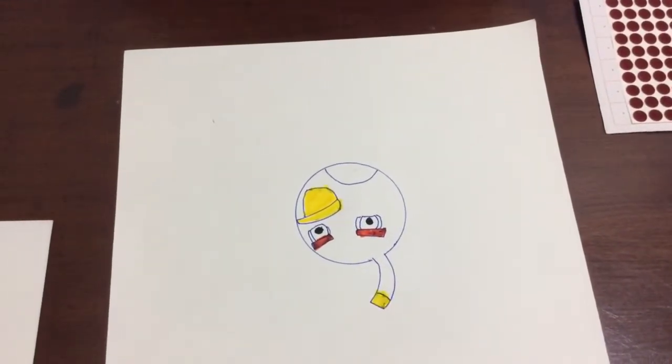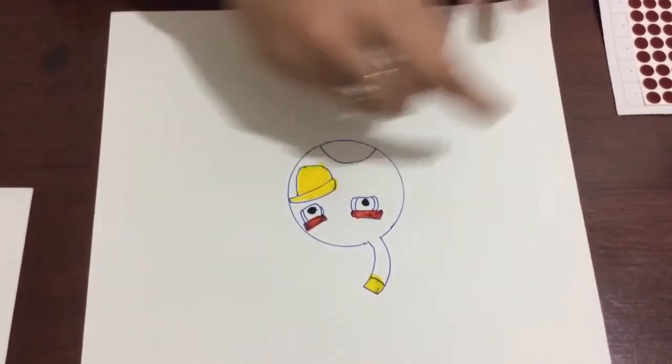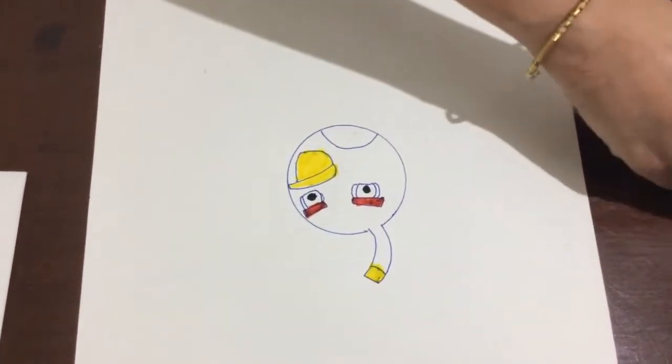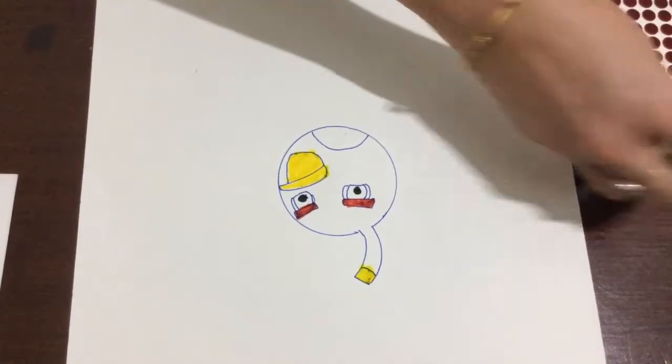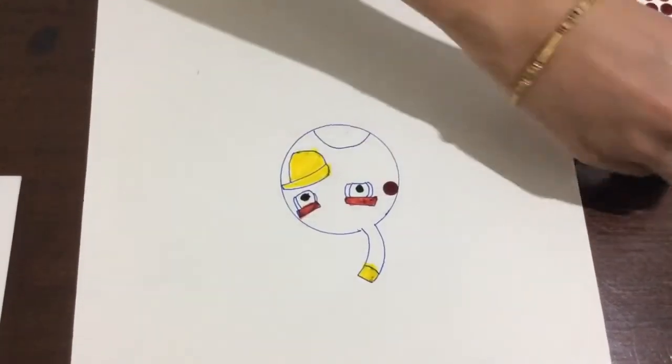Once the portions that are needed to be colored are colored, ask your child to start pasting bindi. So this is the bindi and they will take out one bindi and start pasting it like this.